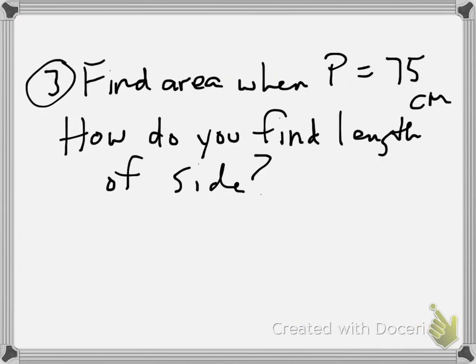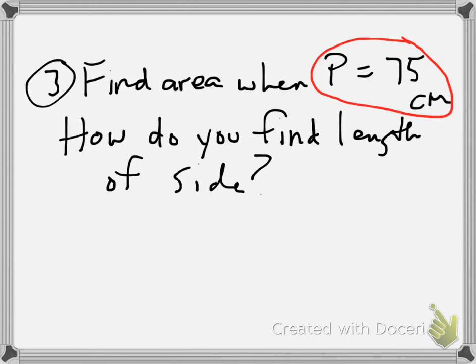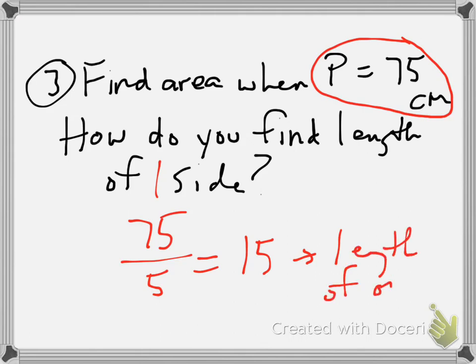Last problem: find the area when the perimeter is 75. Area equals one half apothem times perimeter. I know what the perimeter is—75—but how do you find the length of one side? You find the length of one side by taking the perimeter and dividing by the number of sides. So this is the length of one side.